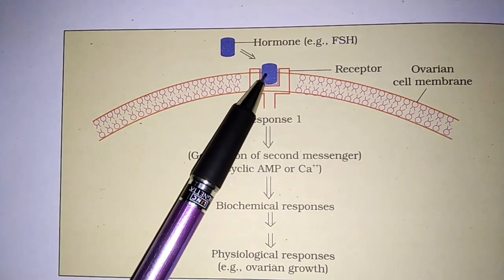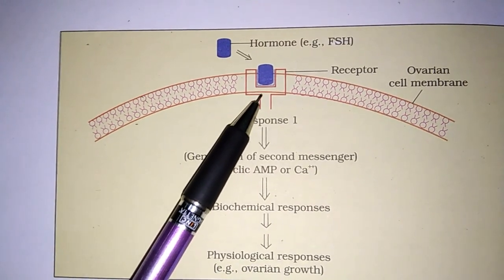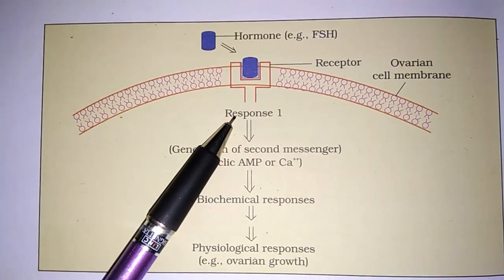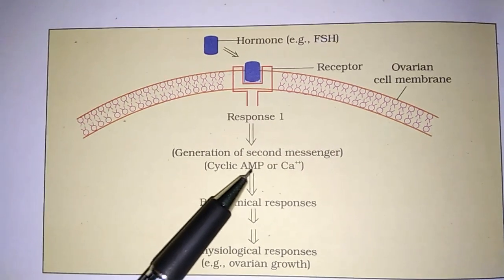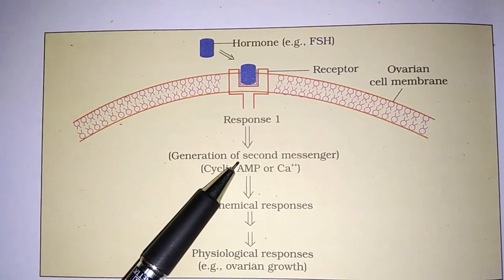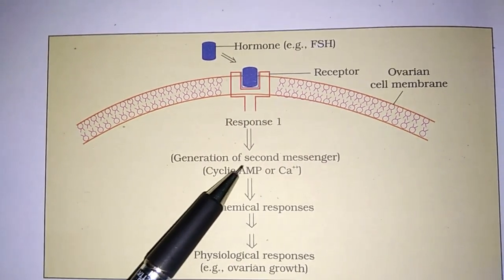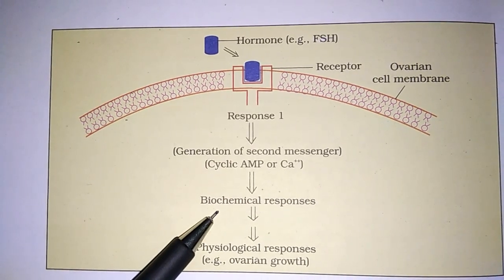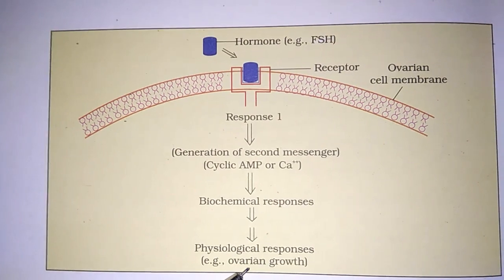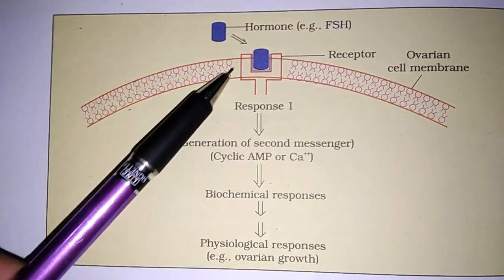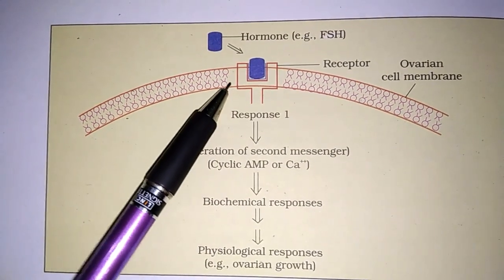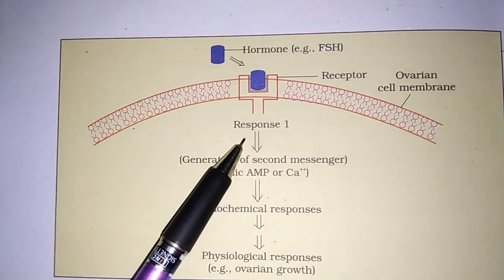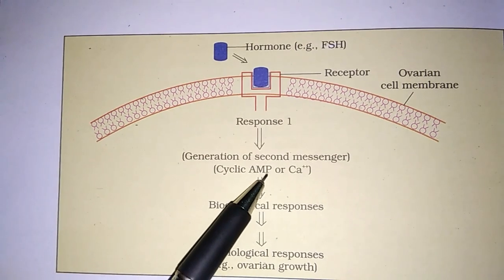Toh yeh jo hormone hai, yeh kis tarah work karta hai — primary messenger ki tarah act karta hai. Aur yeh jo receptor hai iske saath bind ho jaata hai — binding of hormone to the receptor. Ab yeh kya banayega — hormone receptor complex. Now this hormone receptor complex, yeh kya karayega — cell ke andar adenylyl cyclase ki presence mein jo ATP hai usse convert karega. Cyclic AMP mein. And cyclic AMP is a type of secondary messenger.